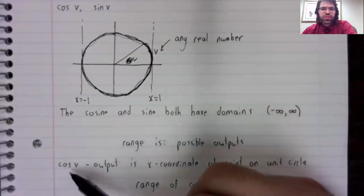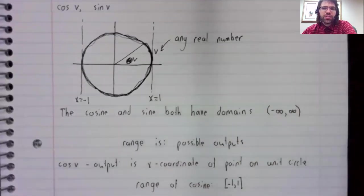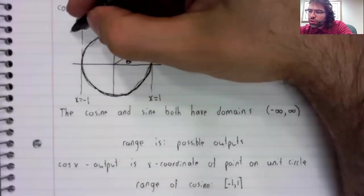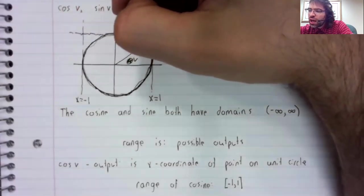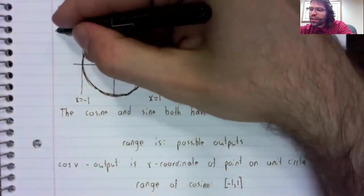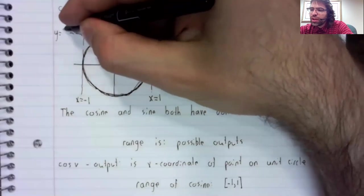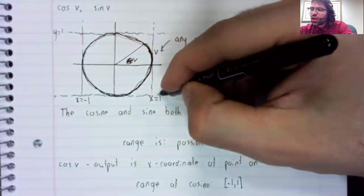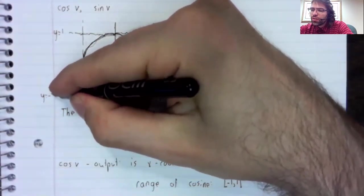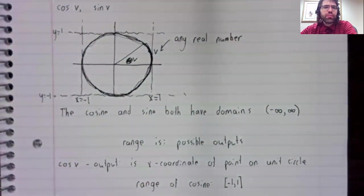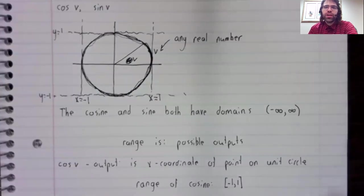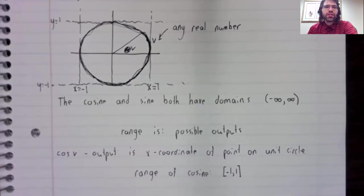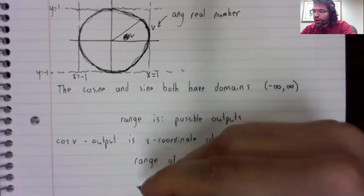And as for the sine, it's the y coordinate, and your y coordinates are stuck between negative 1 and 1, just like your x coordinates are.